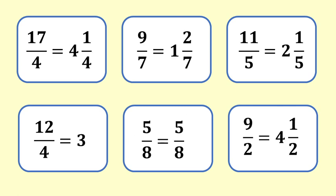Here are the answers. 17 fourths is equal to 4 and 1 fourth, 9 sevenths is equal to 1 and 2 sevenths, 11 fifths is equal to 2 and 1 fifth, 12 quarters is equal to 3, 5 eighths is equal to 5 eighths, 9 halves is equal to 4 and 1 half. I hope that helped develop your fluency and understanding.